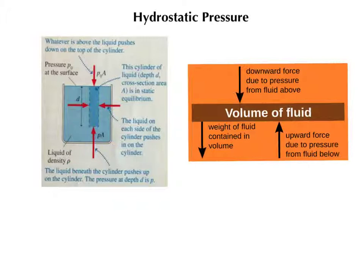The liquid beneath pushes up on the cylinder, and the pressure down here is greater than the pressure up here. So for any volume of fluid that has a downward force due to the pressure from the fluid above, and has a downward force due to the weight of the fluid contained in that volume, there's also an upward force due to the pressure from the fluid below. Because the pressure from below is greater than the pressure from above, our net force is zero.